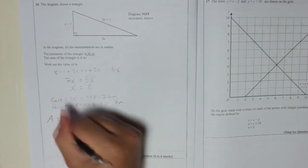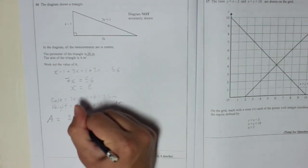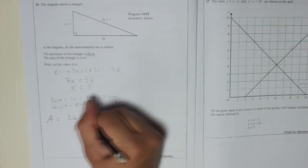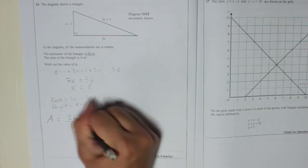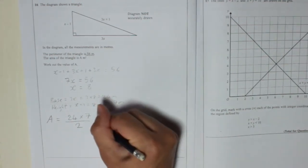So a, the area, is base times height divided by 2. So 24 times by 7 divided by 2.